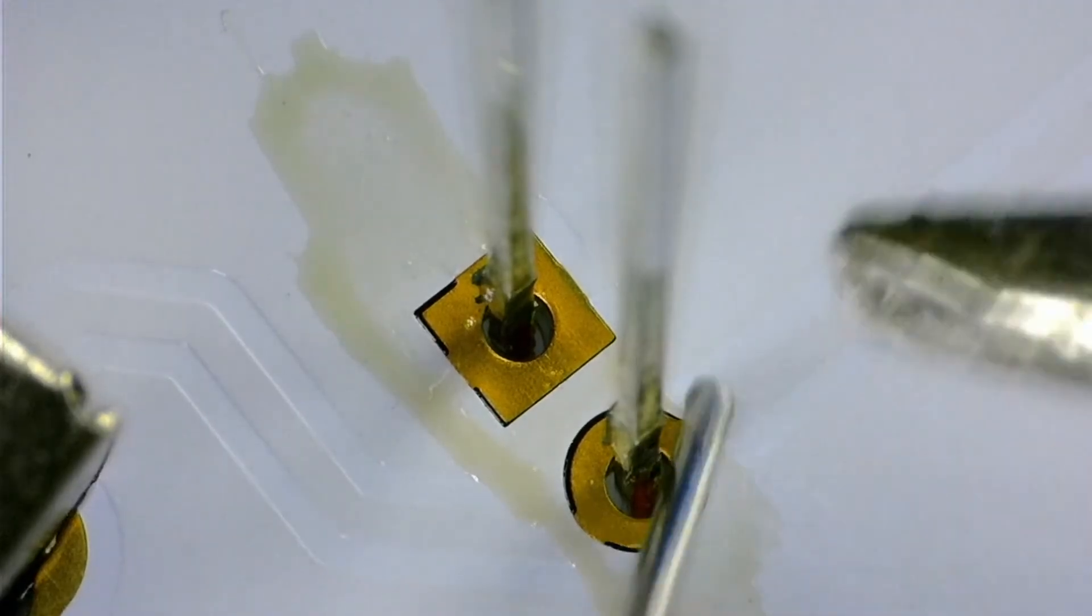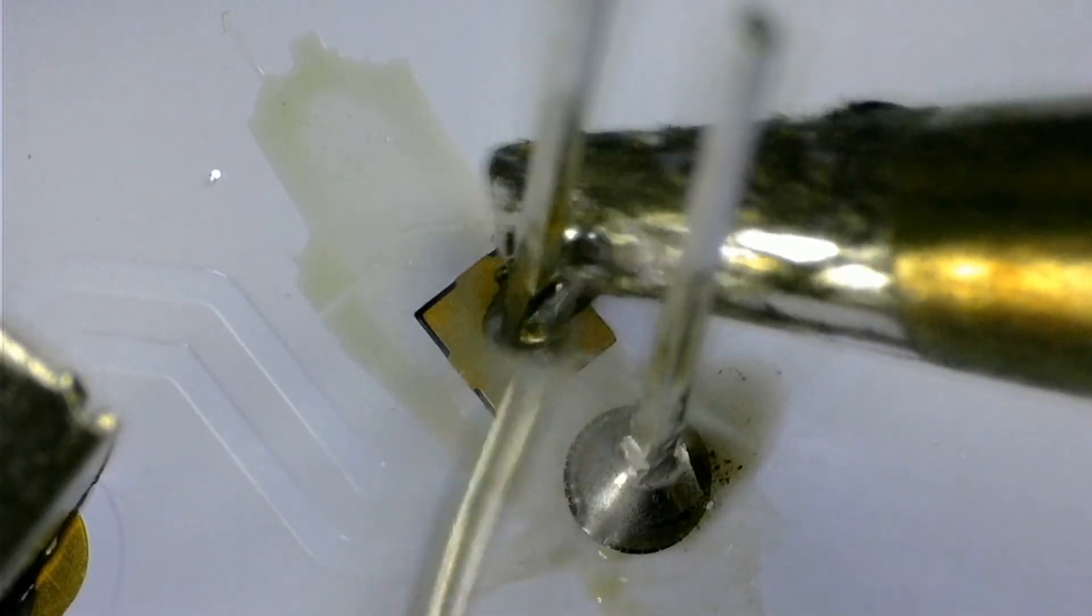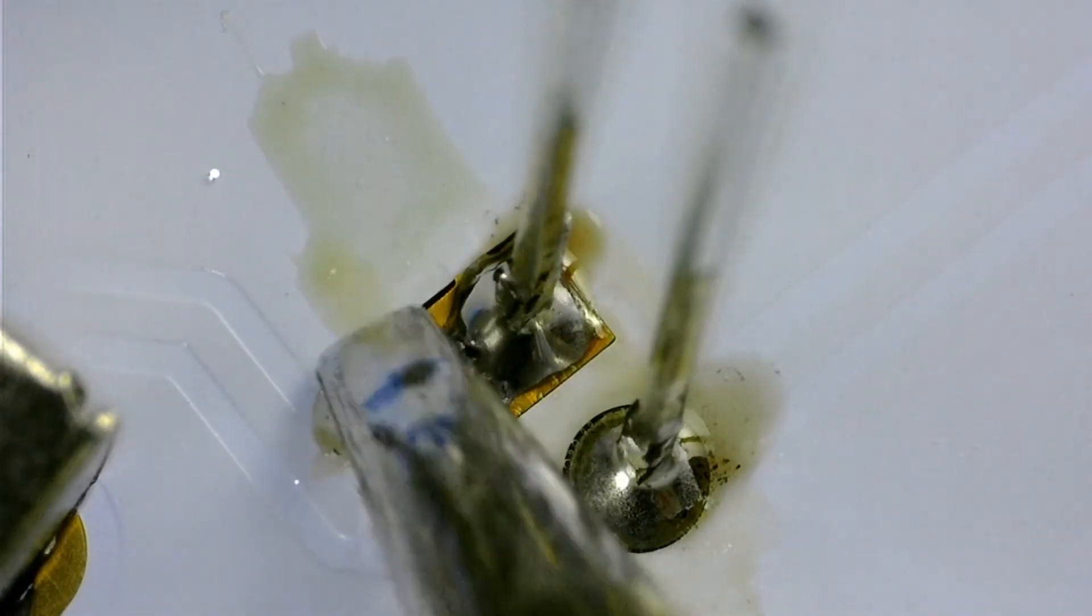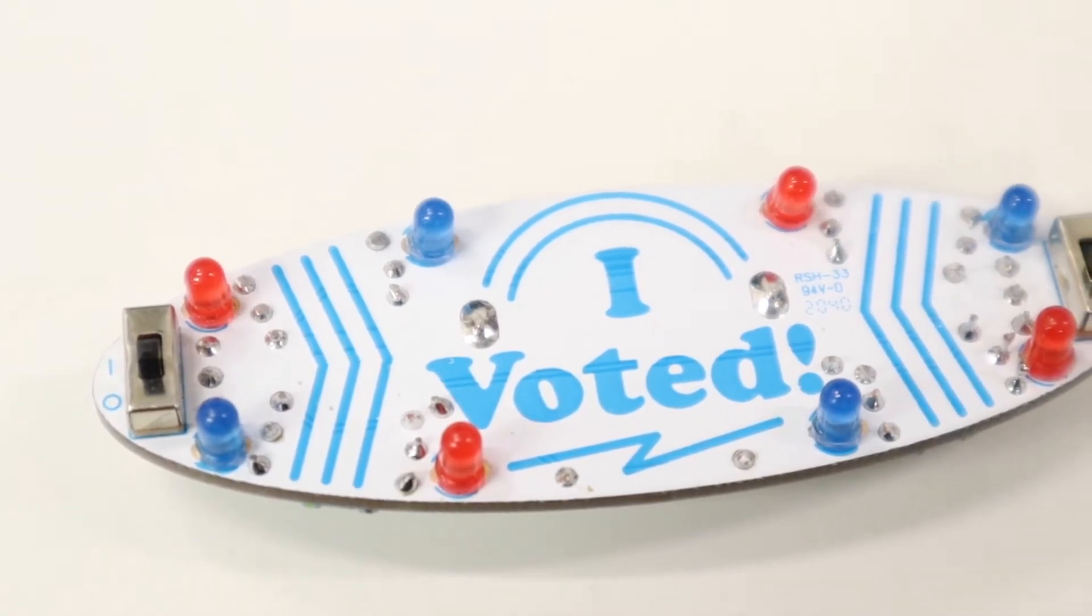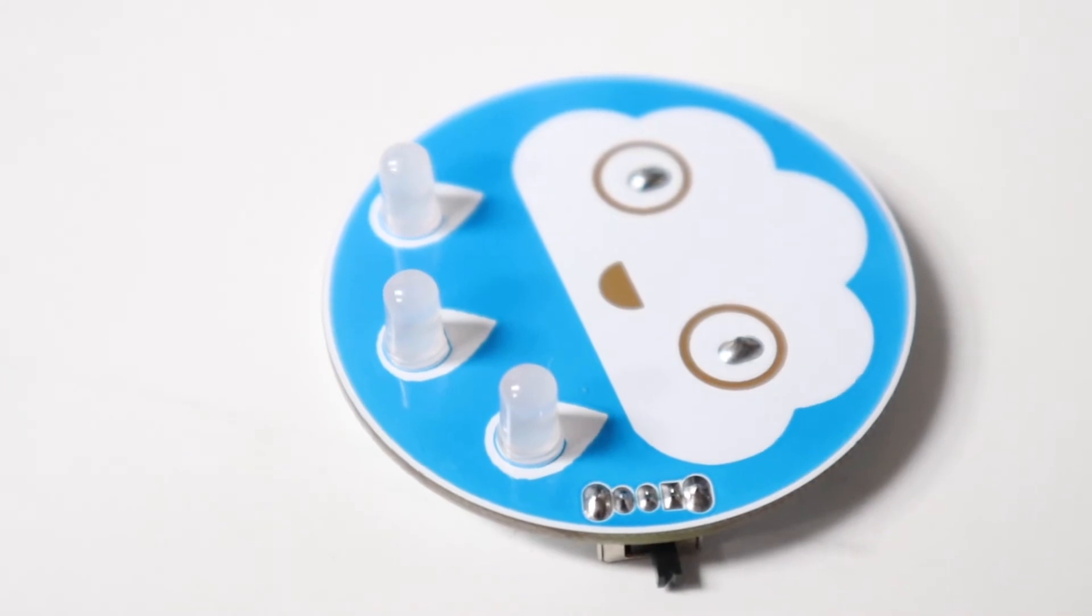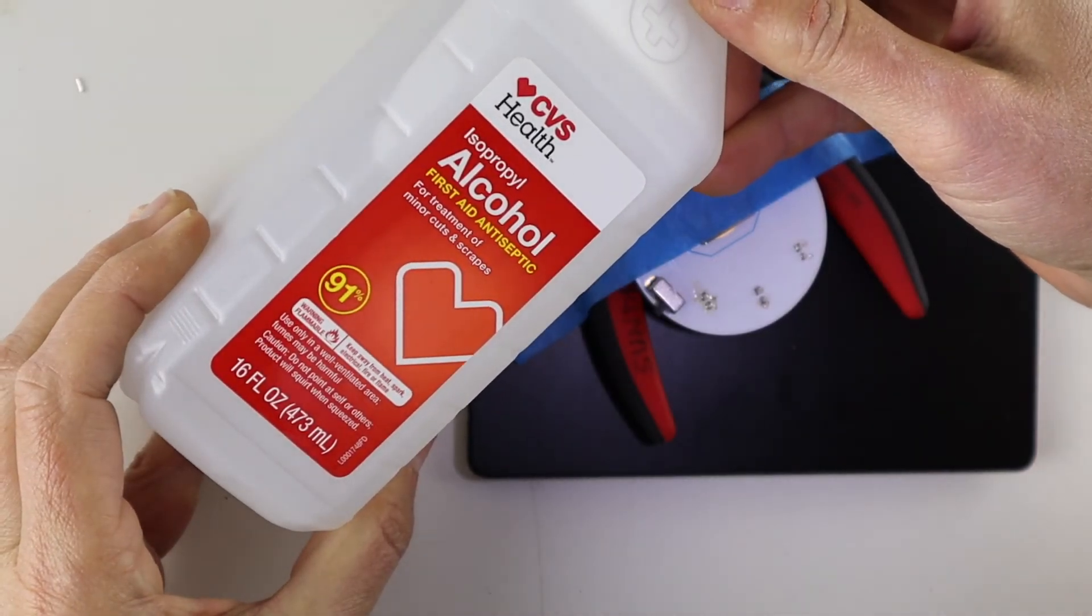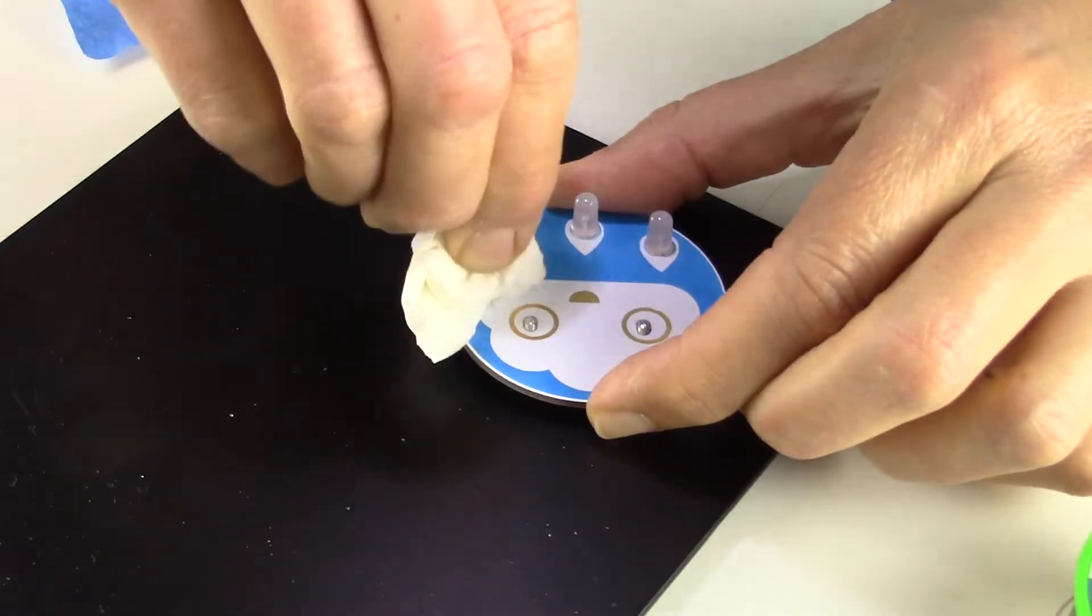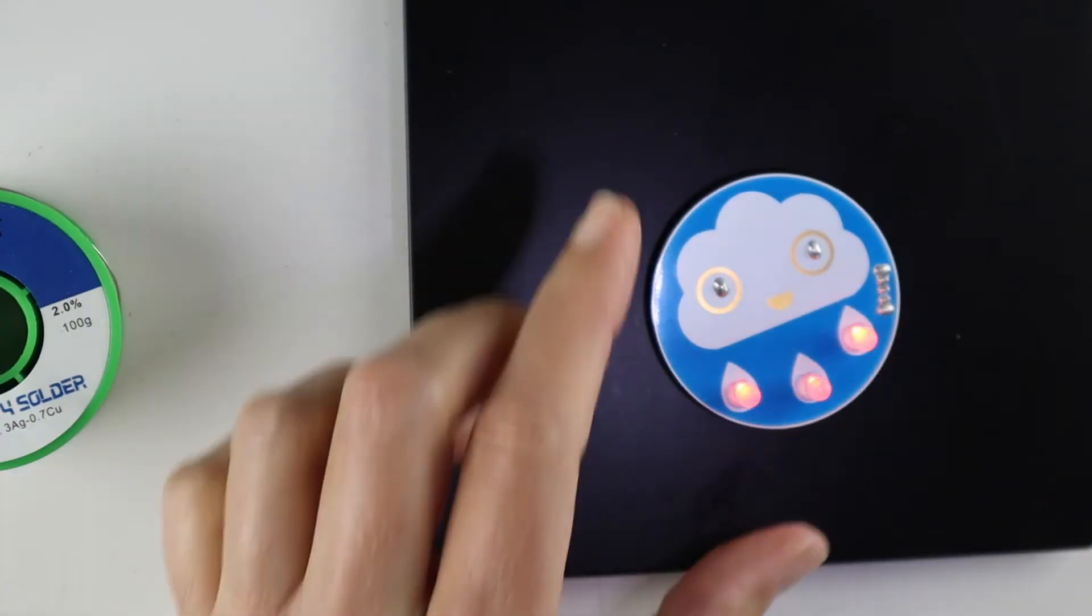You'll notice that rosin flux leaves a yellow-brown residue. And you don't have to clean it off, but if it's left for a long time or in humid environments, it can eventually cause joints to corrode. And your board just looks nicer without burnt flux residue. You can easily wipe it off with 90% or higher isopropyl alcohol, available at any drugstore, and either a paper towel or q-tips. Now that you've learned to solder, go make something!